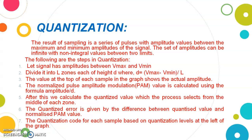After sampling, we quantize our data — that is known as quantization. The result of sampling is a series of pulses with amplitude values between the maximum and minimum amplitude. The samples will remain between the maximum and minimum amplitude. The set of amplitudes can be infinite with non-integral values between those limits. These signals will then be quantized, so each discrete pattern shows the amplitude of the analog signal at an instant.